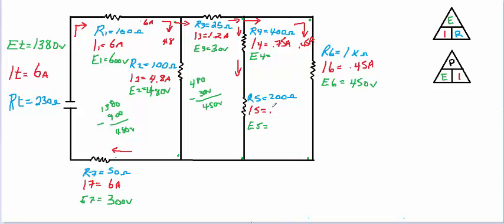Because R4 and R5 are in series with each other, 0.75 amps flows through both. Using Ohm's Law: E4 equals I4 times R4, so 0.75 times 400 ohms gives a 300-volt drop. The total voltage from here to here is 450 volts, and we've just dropped 300 volts, so the remaining voltage across R5 must be 150 volts. We can verify: E5 equals R5 times I5, so 200 times 0.75 is 150 volts. And it's just as easy as that.